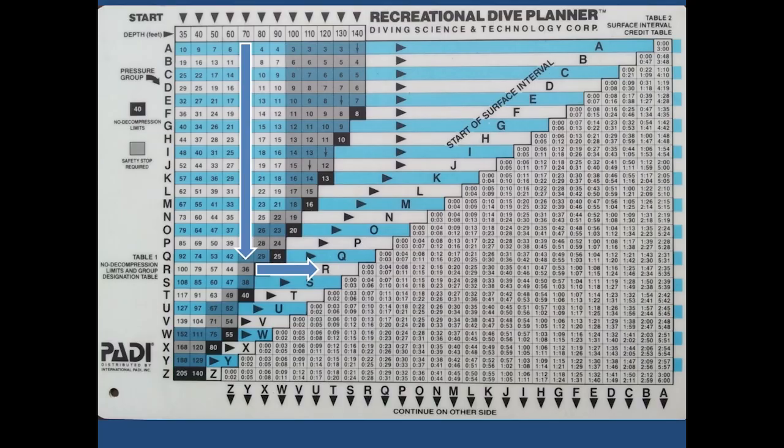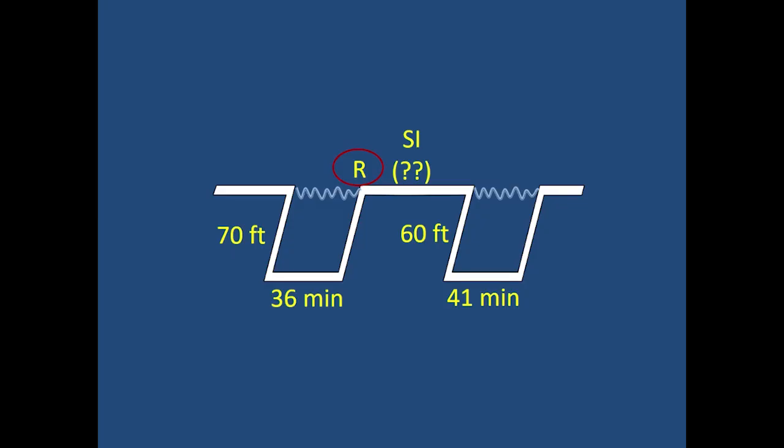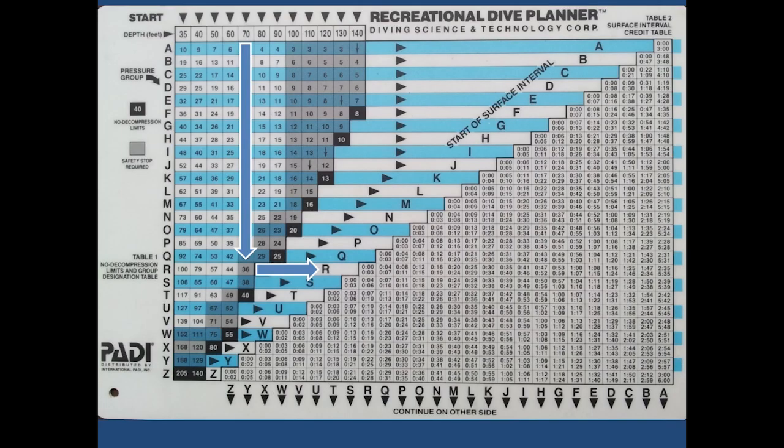So we start normally at 70 feet on the first table. We find the time. Follow the arrow to the right to find the letter for the pressure group. In this case it's going to be R. We don't have the surface intervals,